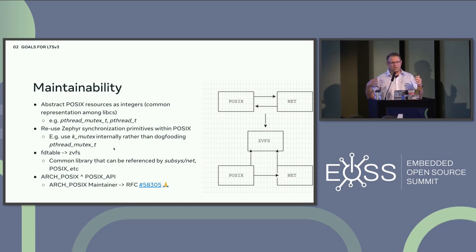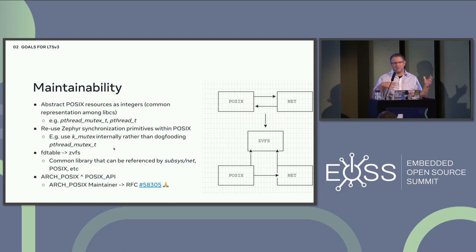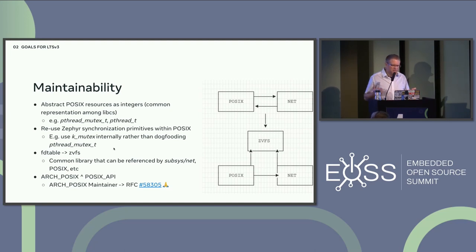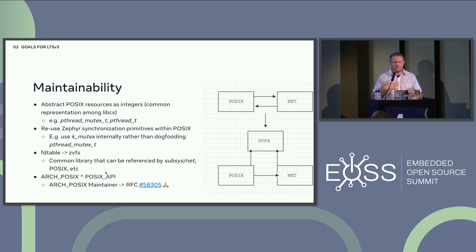One thing I worked on personally was getting rid of implementation details — struct internals — for things like pthread_mutex, condition variables, pthread itself. Instead of giving users a struct they'd declare on their stack, we give them an integer, with an internal array we use to track, create, and destroy resources. That gives fine control over resource count. Also, previously pthreads were implemented with pthread mutexes rather than kernel mutexes — a layering violation that increased maintainability cost.